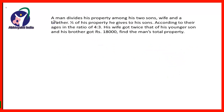The next question is: a man divides his property among two sons, wife and a brother. One half of his property he gives to his sons according to their ages in the ratio 4 is to 3. His wife got twice that of his younger son and his brother got Rs.18,000. Find the man's total property.